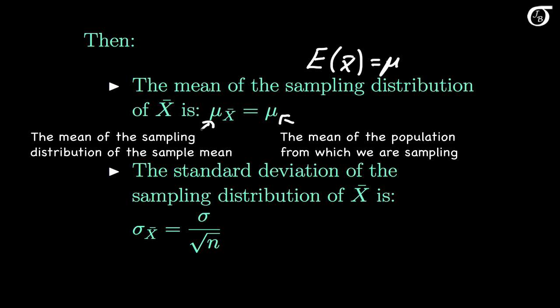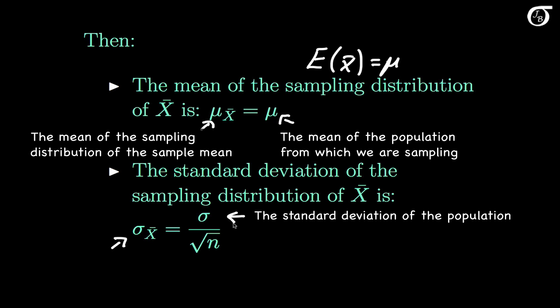The standard deviation of the sampling distribution of X bar, which we'll represent by sigma with a subscript of X bar, is equal to the standard deviation of the population from which we are sampling, divided by the square root of the sample size. The standard deviation is just the square root of the variance, so the variance of X bar is equal to that quantity squared, or sigma squared over n.